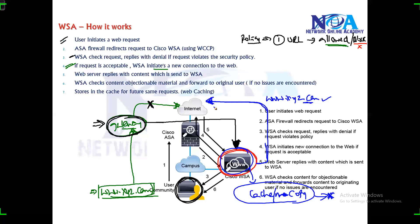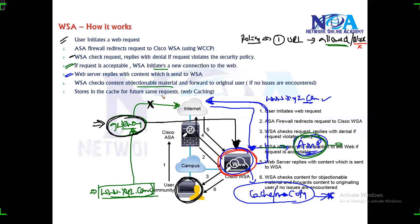So the request is now coming from the WSA onto the internet, and then the particular web server replies back with the content. The web server replies with the content, which is sent to the WSA. Once the WSA receives it, it will check for advanced malware protection — scanning for any kind of malicious codes or objectionable material. If there is any, that will again be blocked. If it's okay, then it is going to store it in the cache.